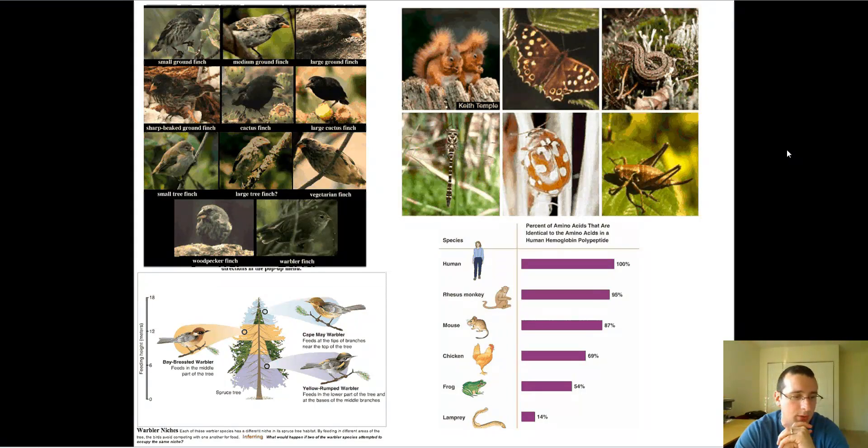And then you have the Yellow Rump warbler, which fits on the actual bottom of the spruce tree. And because they have different niches, these animals are actually not going to be interbreeding, and they actually look kind of different and act different, and therefore they must be different species. In other words, if you fulfill a completely different ecological niche or a different role or a different habitat in the environment, more often than not, you are a different species.